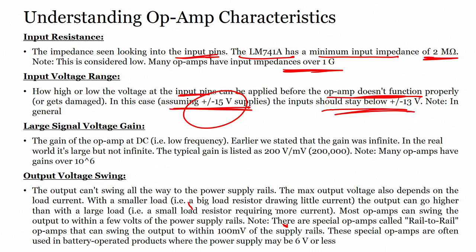Large signal voltage gain is the gain of the op-amp at DC. Earlier we said the gain was infinite, but in the real world it is large but not infinite. Typically, the gain is about 200 volts per millivolt, or 200,000.